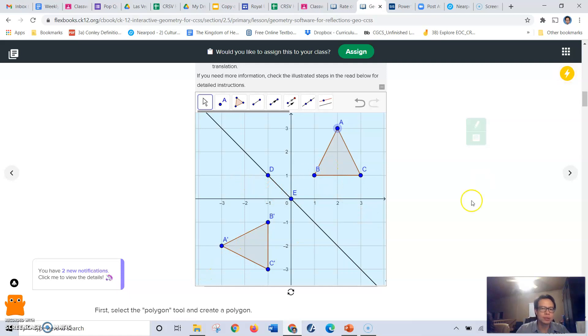So that's how you can use GeoGebra to reflect an image by hand. Feel free to rewind if you miss a step.